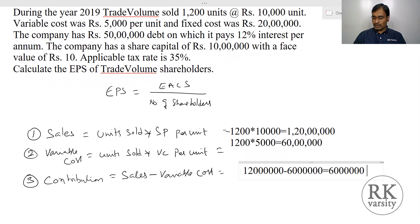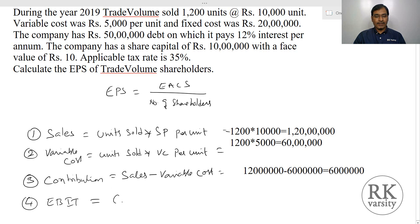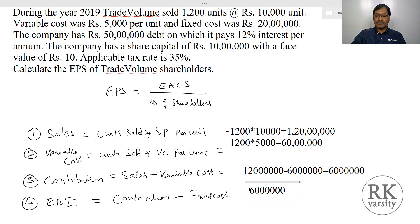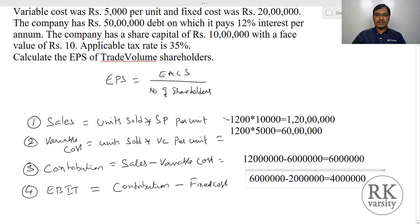Next, we calculate EBIT — Earnings Before Interest and Tax. EBIT equals contribution minus fixed cost. Contribution is 60 lakhs and fixed cost is 20 lakhs. So 60 lakhs minus 20 lakhs gives EBIT of 40 lakhs.